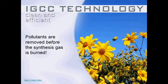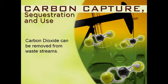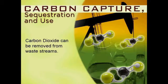The IGCC process produces electricity cleanly and efficiently. In a conventional power plant, emissions are removed at the end of the process. With IGCC technology, pollutants are removed from the synthesis gas before it is burned. Carbon dioxide is believed to be one of the leading causes of global warming. The gasification process allows carbon dioxide to be removed from the waste stream through carbon capture and utilization or sequestration technologies. Because of concentrated levels of carbon dioxide in the waste stream, gasification is more amenable to carbon capture and sequestration than the combustion exhaust, known as flue gas, from conventional coal combustion.